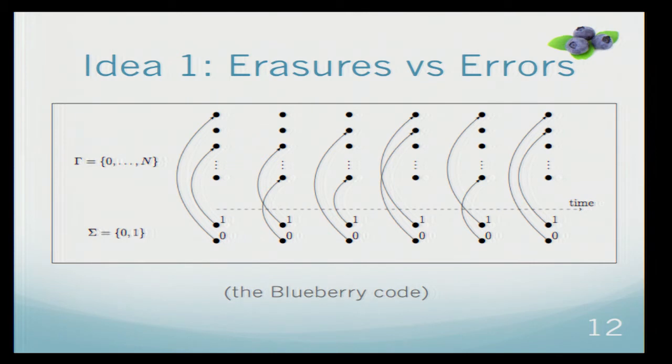In this case, we will call it an erasure. The transmission is marked as an erasure, and Bob knows that this is a corrupted transmission. The thing about erasures is that from the point of view of error correcting, erasures are much more easy to handle than errors.